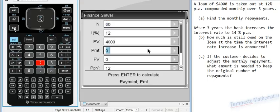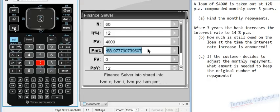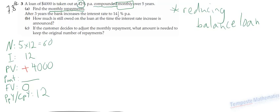Scroll my way back over to payment. Press enter, and we get this value here. So, as we're dealing with finance, we want to round this to the nearest cent, which is going to be $88.98. So, for part A, the monthly repayments are $88.98 per month.